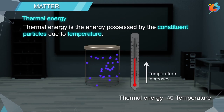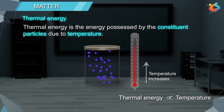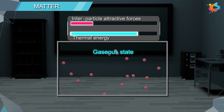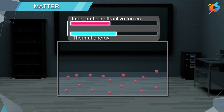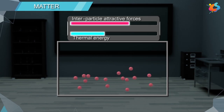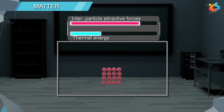Thermal energy is directly proportional to temperature. As temperature increases, thermal energy also increases, and hence the movement of constituent particles also increases. If interparticle attractive forces are very weak and thermal effects are predominant, the substance will be in gaseous state. If interparticle attractive forces are slightly more than the effects of thermal energy, the substance will exist as liquid. At low temperature, the thermal energy is low and intermolecular forces are so strong that the particles come closer, cling to one another, and occupy fixed positions — the substance will be in the solid state.